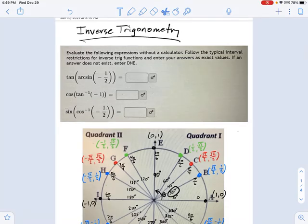Now we're asked to evaluate some composite trig functions. In other words, we're doing first the inverse sine of something and then taking the tangent of the result.